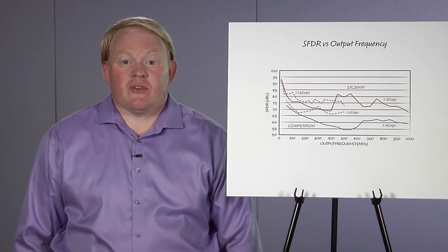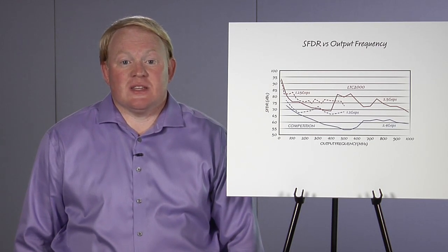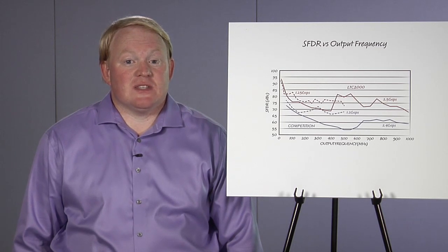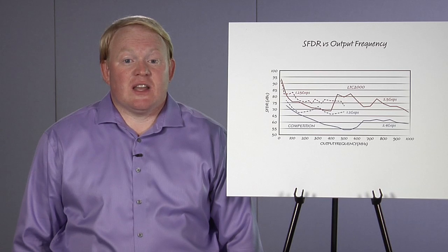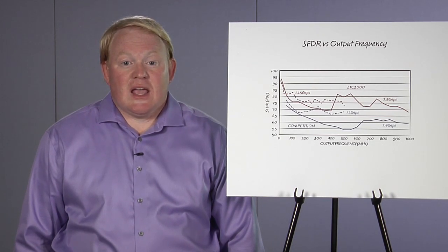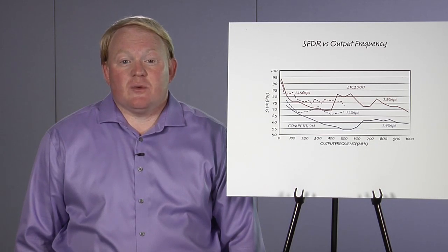The analog output performance of the LTC2000 is unmatched. The noise spectral density is better than 158 dBc per megahertz up to 500 megahertz. It also has spurs-free dynamic range better than 74 dB up to 500 megahertz, and better than 65 dB SFDR for output frequencies up to 1 gigahertz.